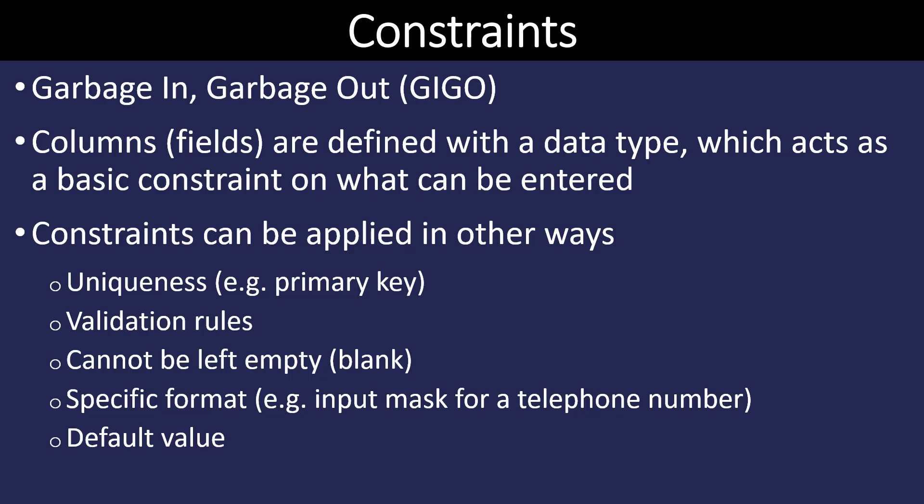Databases collect a lot of information, and if we don't put some constraints in it we could get garbage in, which gives us garbage out. So all of our fields, which are columns, are going to be defined by a data type, which is the first basic constraint on what can be entered in that field. We can add other constraints — for example, uniqueness, so the field designated as the primary key does not allow any duplication.